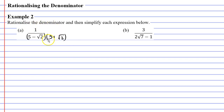Whenever you multiply the denominator by something, you have to multiply the numerator by the same thing. We need to multiply the numerator by 5 plus root 2 as well. Starting with the numerator: 1 times (5 plus root 2) is just 5 plus root 2.